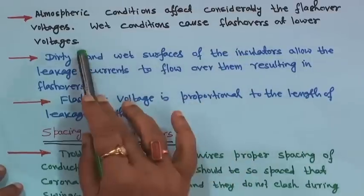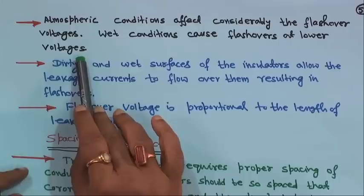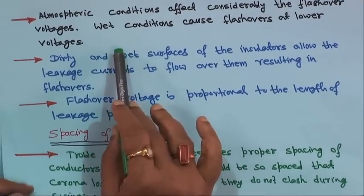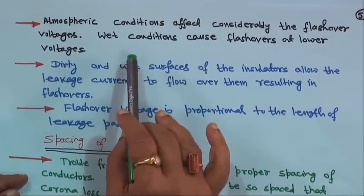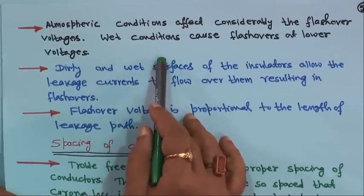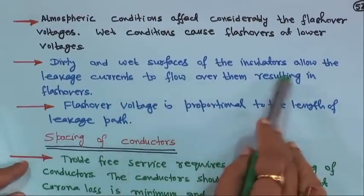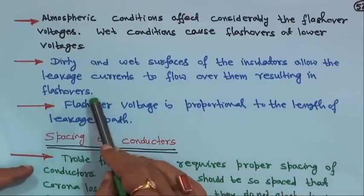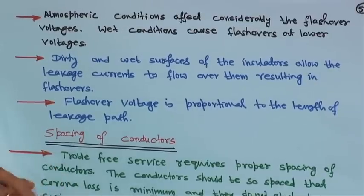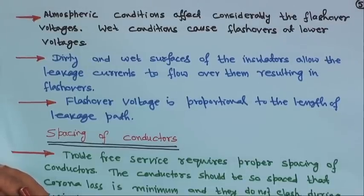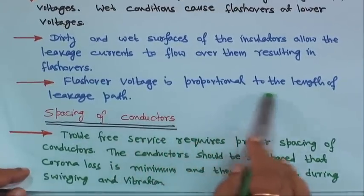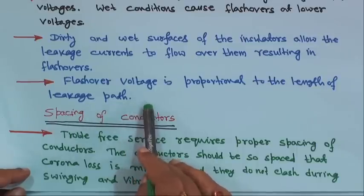Wet conditions cause flashover at lower voltages, particularly during rainy season — this can create problems. I have observed flashover happening during rainy season even in railway traction lines. Dirty and wet surfaces of the insulator allow leakage currents to flow over them, resulting in flashover. However, it does not generally spoil the insulator — the insulator can withstand such flashover. Flashover voltage is proportional to the length of the leakage path.